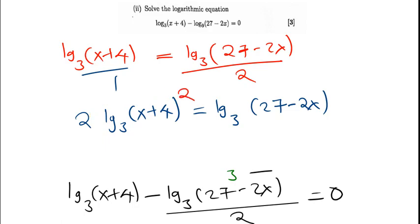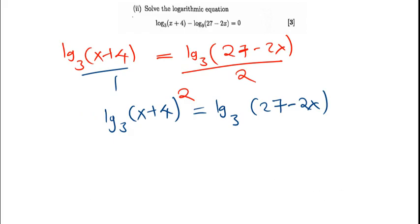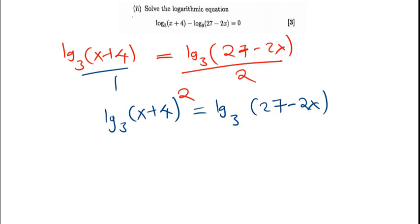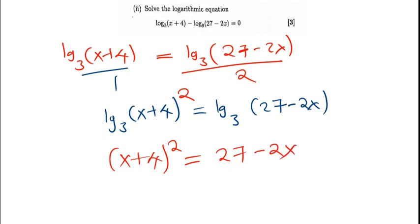So it becomes (x plus four) to the power of two. We've used the same logarithmic rule — remember we had log base three of three to the power two, and we moved that two to become a coefficient, then made it equal to one. Now that the bases match on both sides, for that to be true the arguments have to be equal. So we can ignore the logs and we just have (x plus four) squared equals (27 minus 2x).